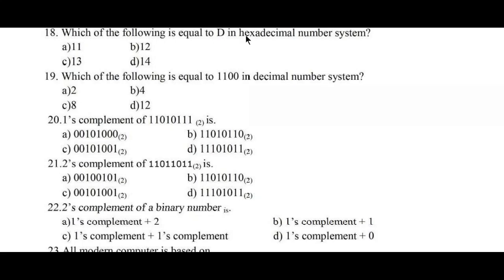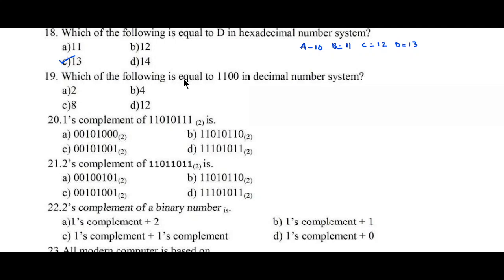Question number eighteen: which of the following is equal to D in hexadecimal? In hexadecimal: A=10, B=11, C=12, D=13. So option C, 13, is the right answer.